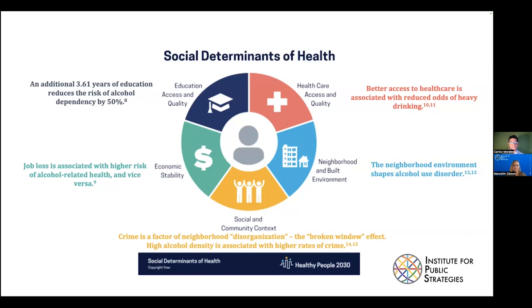Looking at social and community context: you can also look at crime. When crime becomes a factor of neighborhood disorganization — along with drug selling and graffiti — it creates the broken window effect and social cohesion starts to break down.